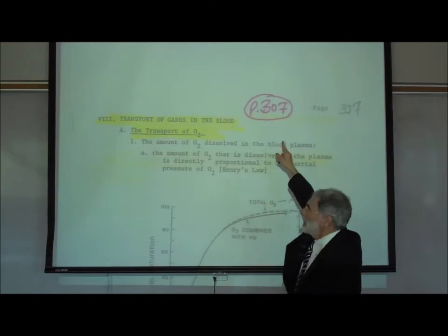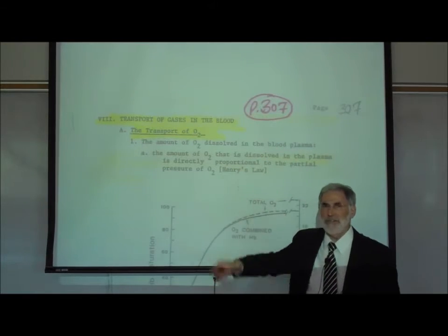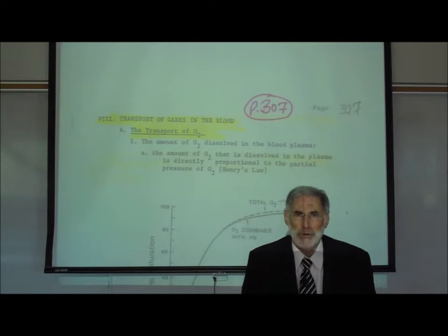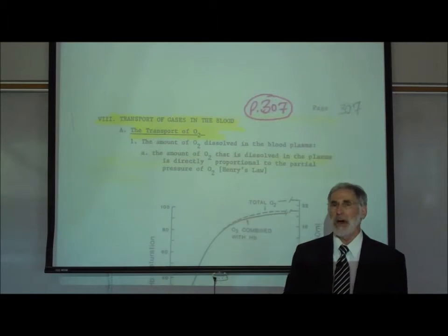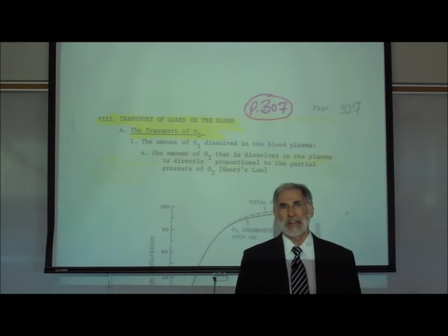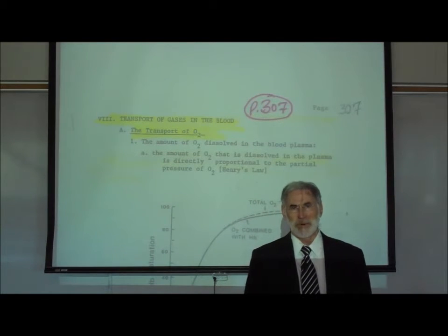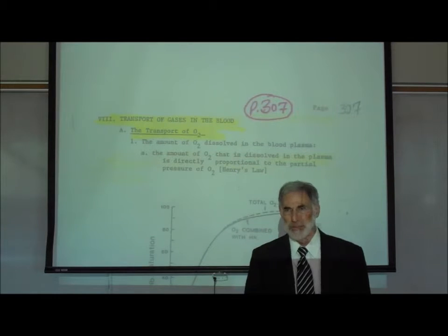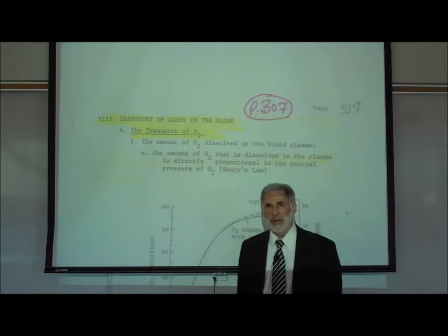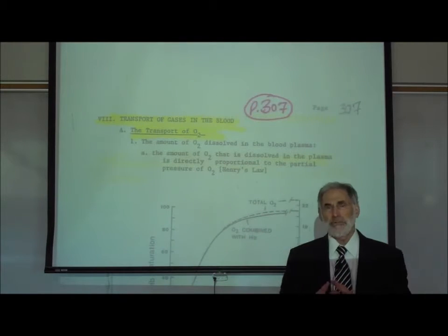We're on page 307 in the lecture outline, and we now want to examine how oxygen and carbon dioxide are transported in the bloodstream. We're going to start with the transport of oxygen.